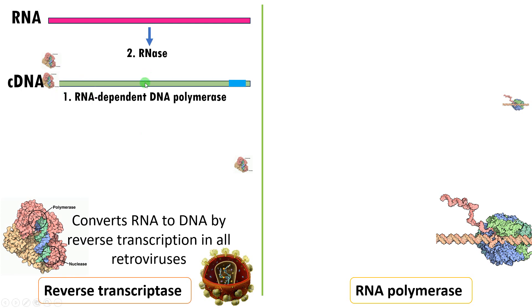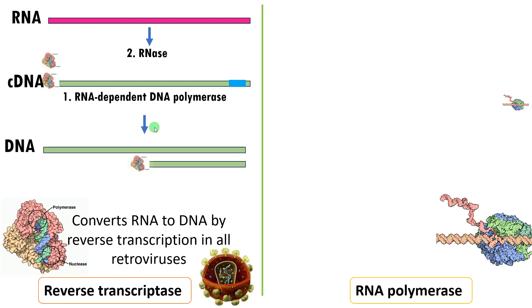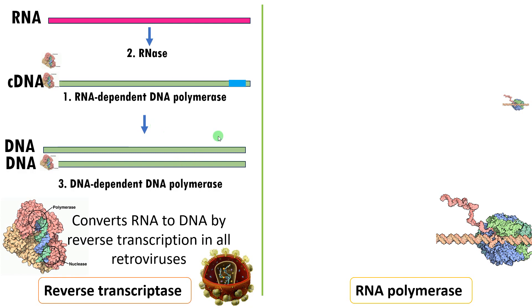Then this cDNA — the single-stranded cDNA — has its second strand synthesized by the same enzyme through its DNA-dependent DNA polymerase activity. So this enzyme has three activities, forming a double-stranded DNA from an RNA genome.